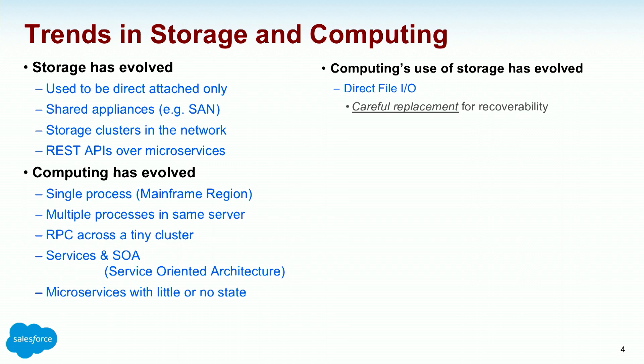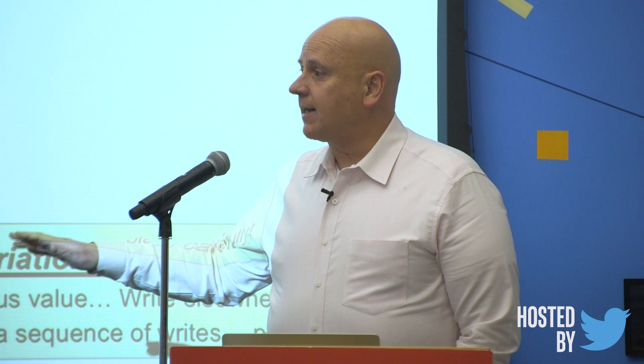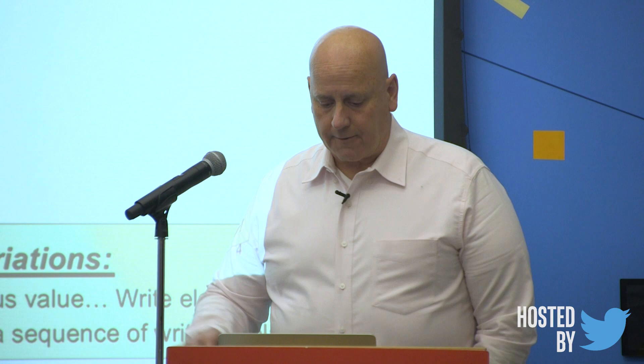Microservices with little or no state: computing's use of storage has evolved. With direct file IO, you used to need to do careful replacement. If a write annihilates the contents before making them good — you'd have the old value, then trash, then the new value — you'd have to write somewhere else and recover. The second issue is that a client crash might interrupt a sequence of writes. If you've written two out of five things needed and then crash, how do you put that together?